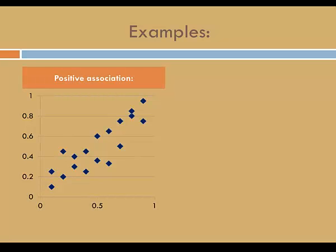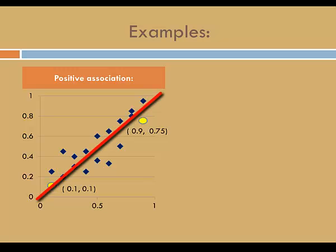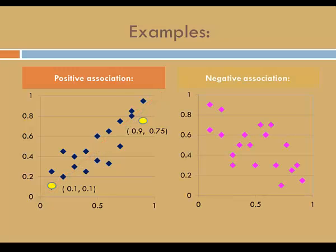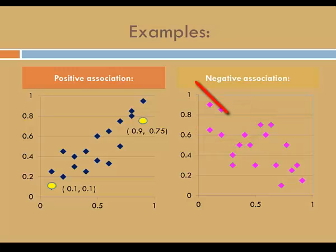Let's look at a couple of examples. Here's an example of a positive association. Notice that smaller values of the explanatory variable are associated with smaller values of the response, and larger with larger. Generally speaking, there's an upward trend as you go from left to right. Here's an example of a negative association. Notice that smaller values of the explanatory variable, which would be on the x-axis, are associated with larger values of the response variable, which is on the y-axis. And generally speaking, there's a downward trend left to right.